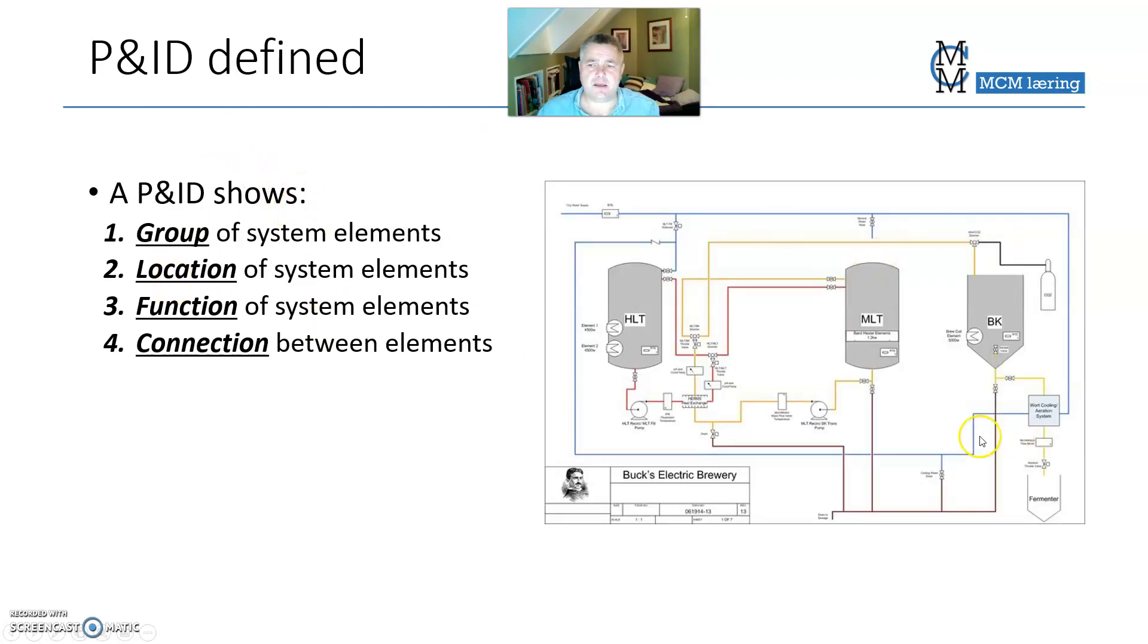A P&ID like this one shows four things. First of all, what kind of group the system element is in, the location where it is, the function what it does, and the connection how they are connected to each other. Let's go through these four elements of a P&ID and describe it in further detail.